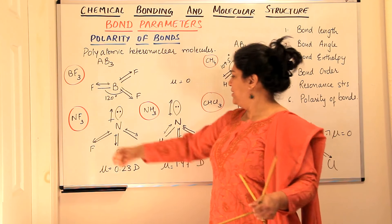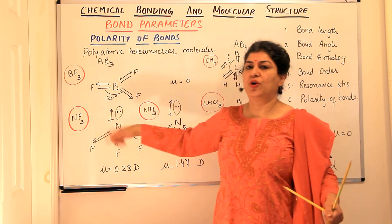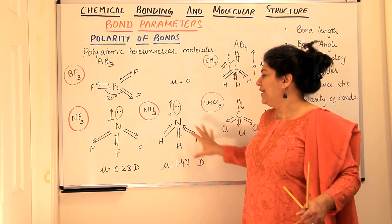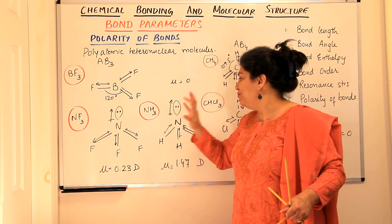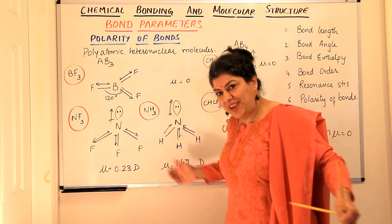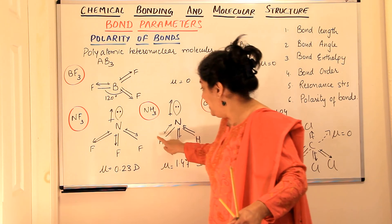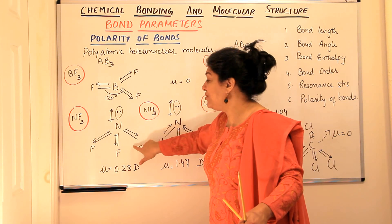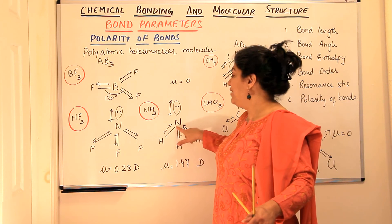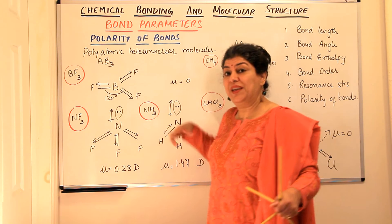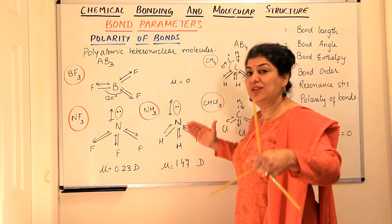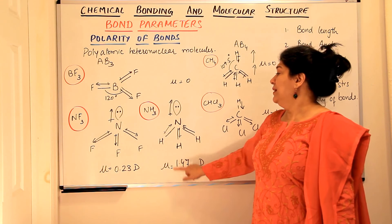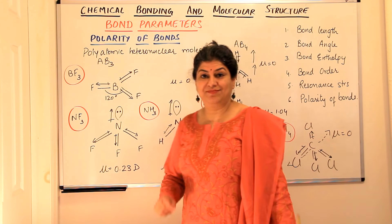In ammonia, all the dipoles are pointing in one direction — they are reinforcing each other. But in NF3, all the dipoles are scattered, moving away from each other, fighting with each other: the lone pair pulls upward while the bond dipoles pull outward. In NF3 the energy is being scattered, while in ammonia all the movement of electrons is in one direction. Although the electronegativity difference of hydrogen and nitrogen may not be as large as that of fluorine and nitrogen, in NH3 they are all working together in one direction, reinforcing each other — and that's the reason why ammonia has such a high dipole moment.